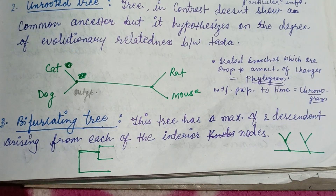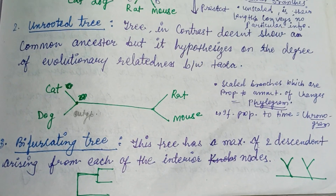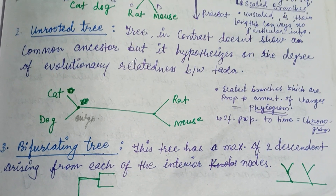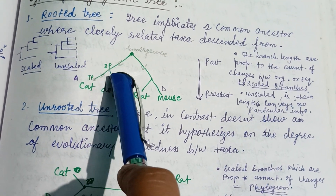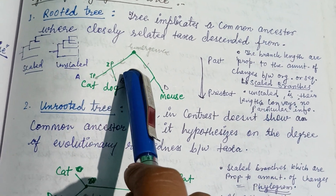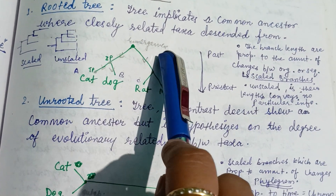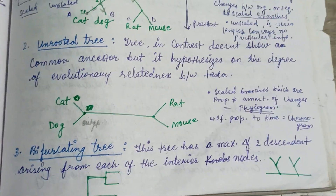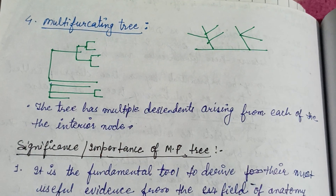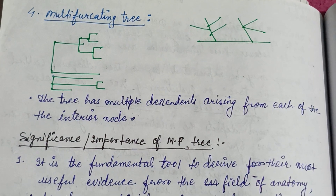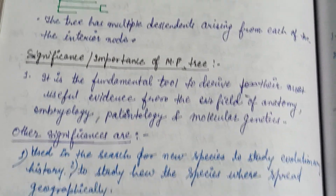A bifurcated tree has a maximum of two descendants arising from each of the interior nodes. In this figure, it shows the internal point or interior node, the terminal point, and the emergence point. A multifurcating tree has multiple descendants arising from each of the interior nodes at its internal point.